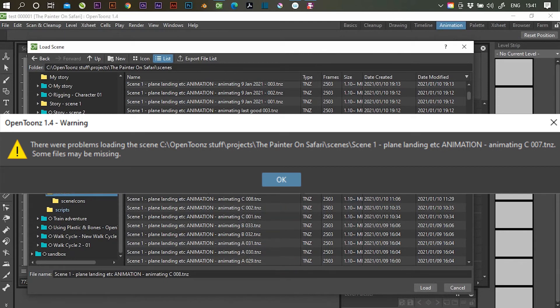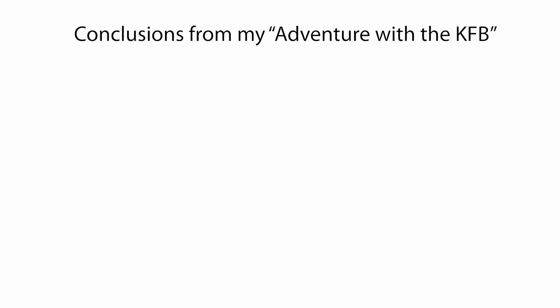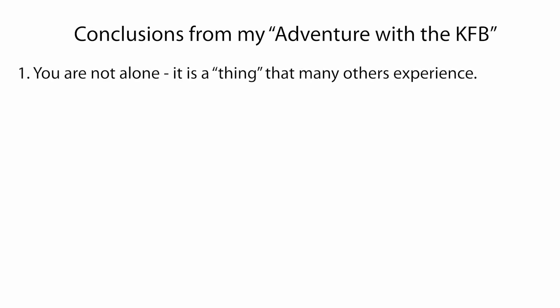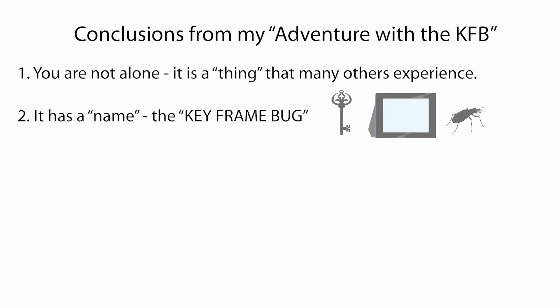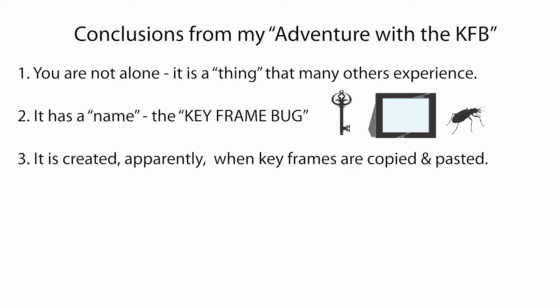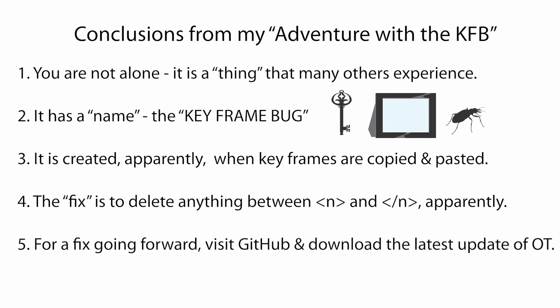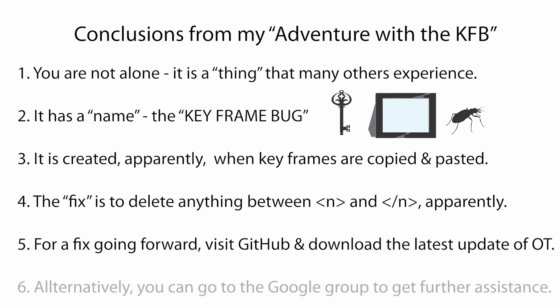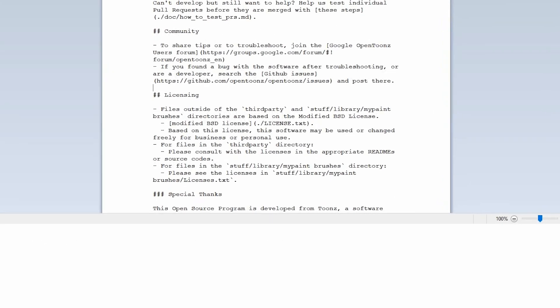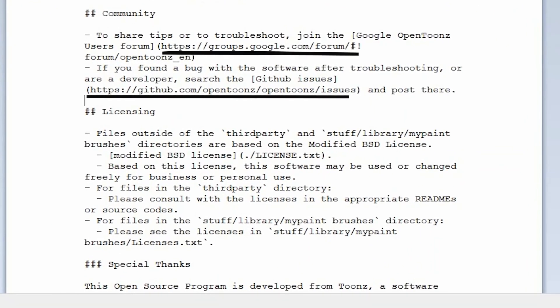In conclusion, a few points from my adventures with the keyframe bug. Firstly, you are not alone — many people using OpenTunes experience this bug. It has a name, the keyframe bug (KFB), and it's apparently created when keyframes are copied and pasted and then OpenTunes reboots and they get corrupted. The fix is to go into the code and delete anything between the two ends. The fix going forward is to download the latest nightly build of OpenTunes from GitHub. Alternatively, if you don't come right, visit the OpenTunes Google group for further assistance.